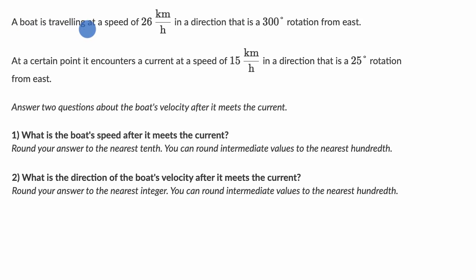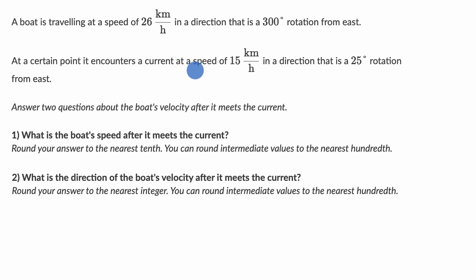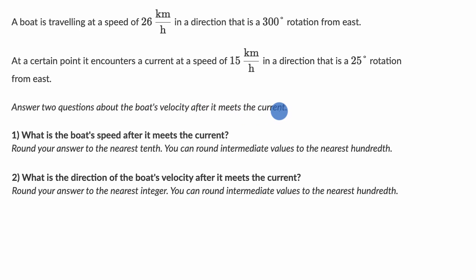We're told a boat is traveling at a speed of 26 kilometers per hour in a direction that is a 300 degree rotation from east. At a certain point, it encounters a current at a speed of 15 kilometers per hour in a direction that is a 25 degree rotation from east. Answer two questions about the boat's velocity after it meets the current.